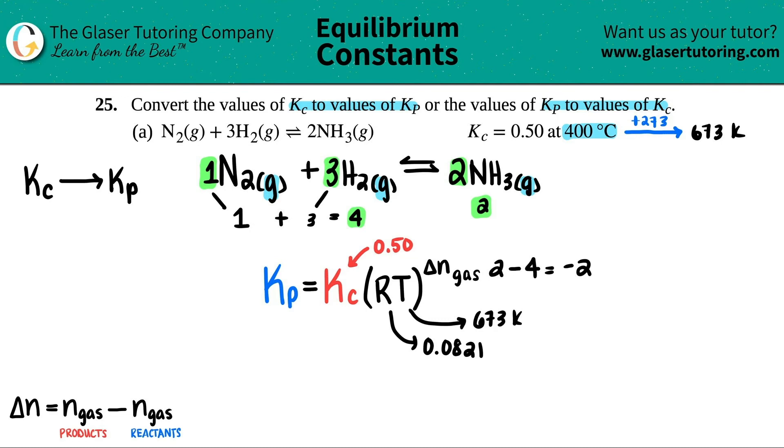So let's just plug everything in. Kp equals 0.50, that's the Kc value, and now it's R times T: 0.0821 times 673. And both of that is going to be raised to the negative two.